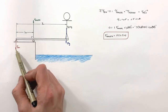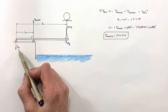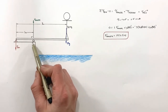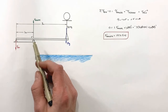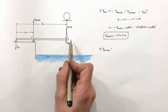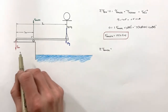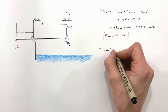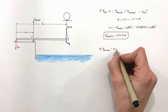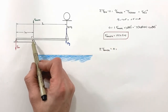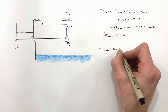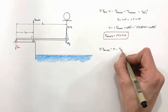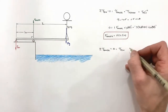Now, to find the force by the pin, instead of looking at torques around the pin, we look at torques around the roller. The sum of all torques around any point is zero in a statics problem. Around the roller, the net torque is zero, resulting from the torque by the pin and the torque by the person.